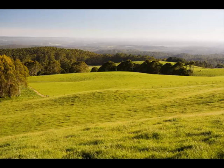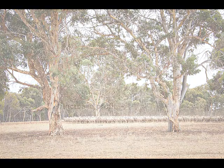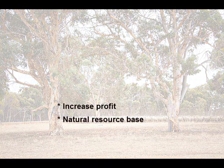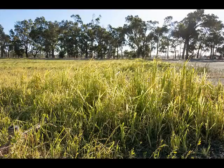These decisions may affect the numbers and types of livestock you run — when they are joined, weaned, sold or purchased, and whether you need to plan for supplementary feed. A good match of the annual pattern of pasture growth and animal demand is likely to increase profit, improve your natural resource base and control risk. The tool helps you do just that by making use of climatic data from your local area, such as rainfall and temperature.